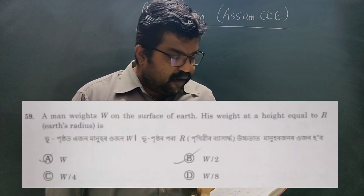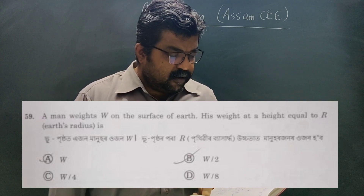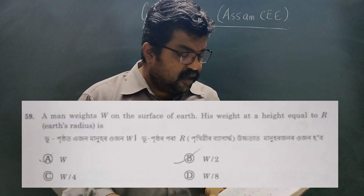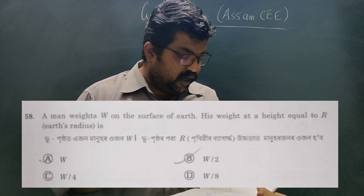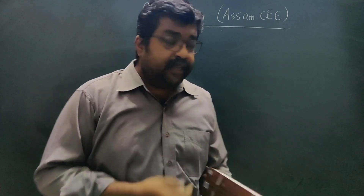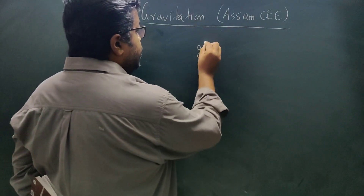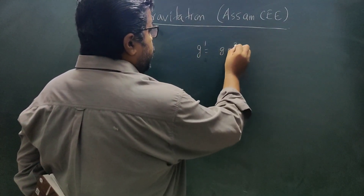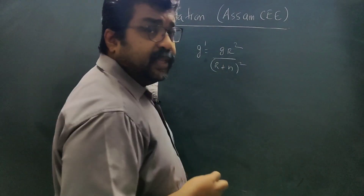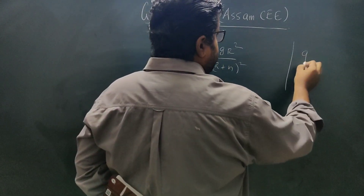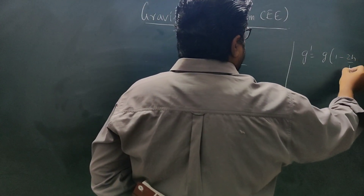In 2019: a man weighs W on the surface of the Earth. What is his weight at a height equal to R, where R is the radius of the Earth? The acceleration due to gravity changes with height by the relation: g' equals g R squared divided by (R plus h) whole squared. There is also an approximate formula g' equals g times (1 minus 2h/R), but that formula is valid only at low heights.